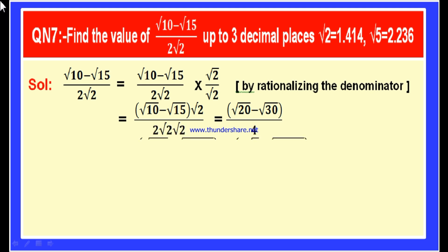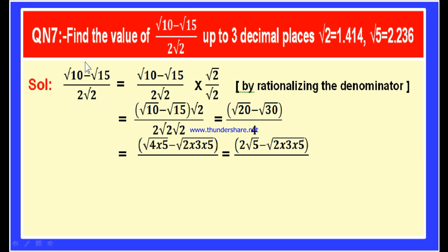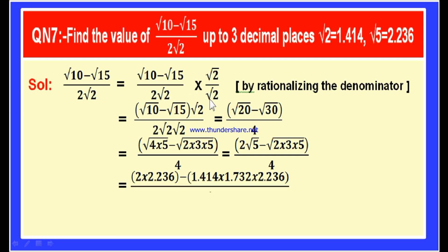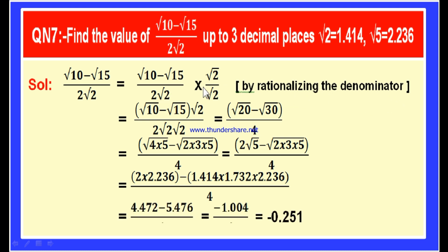We consider root 10 minus root 15 divided by 2 root 2. Since root 2 is there at the denominator, if we multiply this root 2 with another root 2, then root 2 into root 2 will become 2, so that it will become a rational number. Therefore, the rationalizing factor for 2 root 2 is root 2.